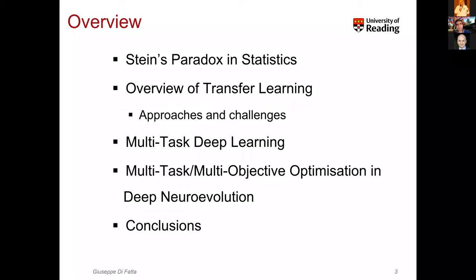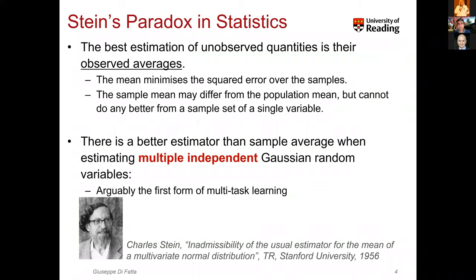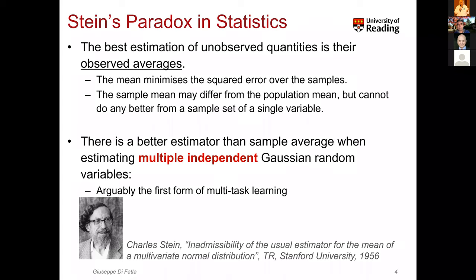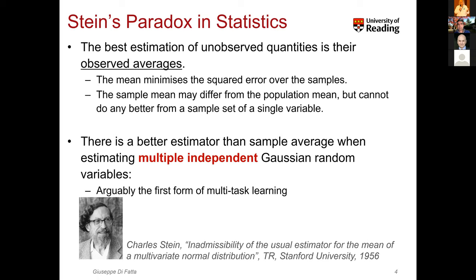I don't know how many of you are familiar with Stein's paradox. It is not strictly speaking a paradox — it's actually not a paradox at all — but it was believed as a paradox when it was introduced in the 1950s. When you have a random variable, you take measurements of some physical phenomenon, and the best estimation of the unobserved quantities for future measurements is the sample average. We compute the average, and it's the best estimator because it minimizes the squared errors over the samples. The sample average may differ from the population mean, especially with a small sample size, but there is no better way to approach this problem for a single model.